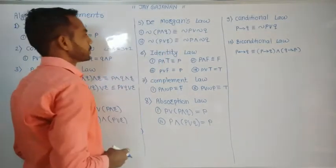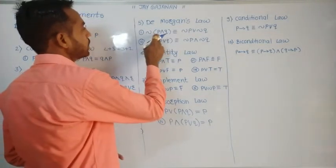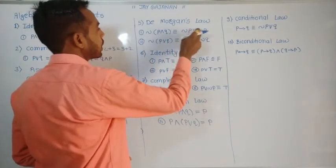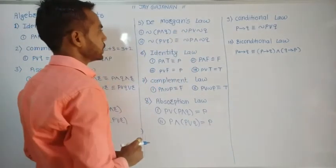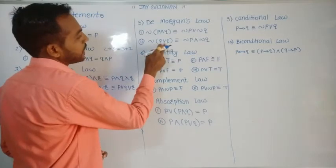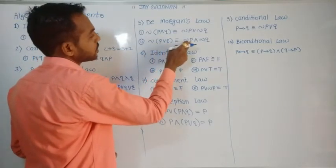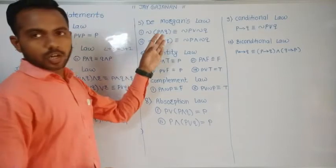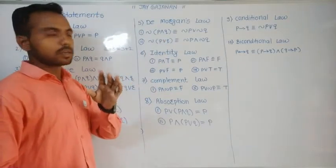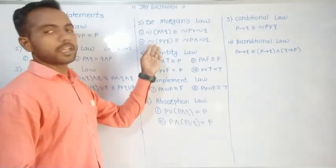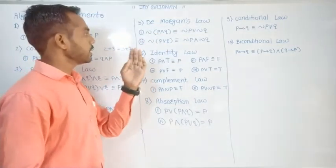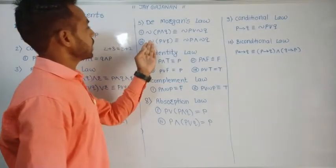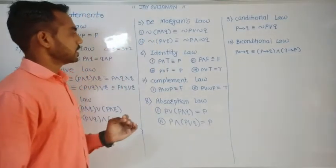Now De Morgan's law: negation of (P and Q) is equal to negation P or negation Q. Negation of (P or Q) is equal to negation of P and negation of Q. De Morgan's law is nothing but a negation of conjunction and negation of disjunction, which we have already learned.